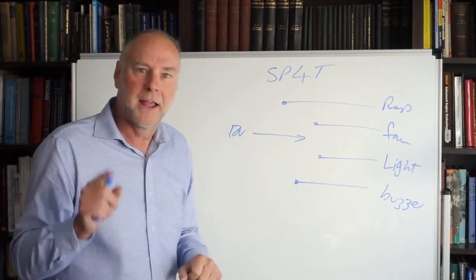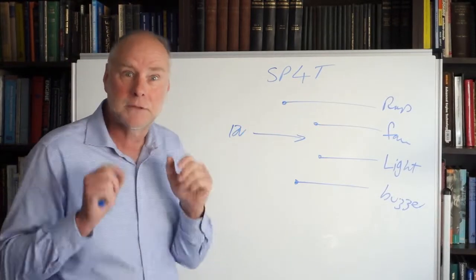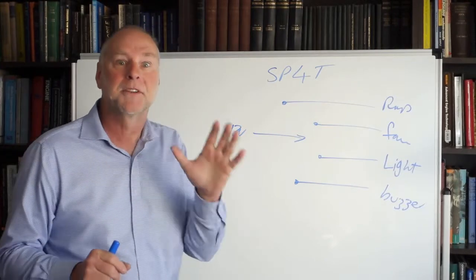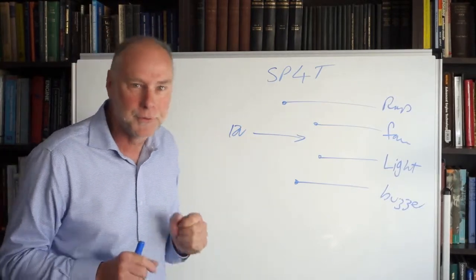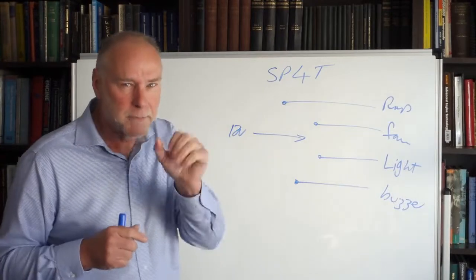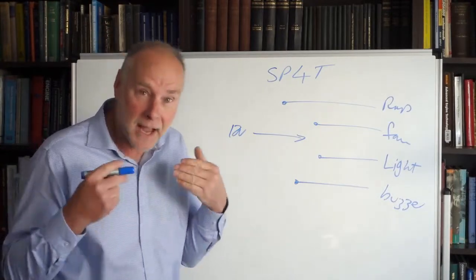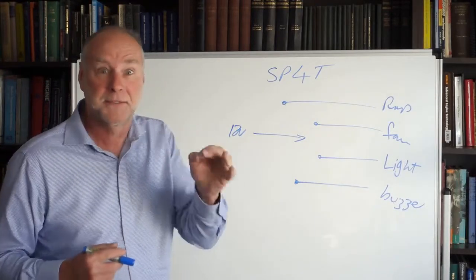So when you're looking at a switch, how many poles has it got? Inputs. And how many throws has it got? How many positions can you switch that input to? And you can usually work a lot of that out by looking at the terminals that are on the back of the switch. If you can't do it from the terminals, have a look at the specification sheet.